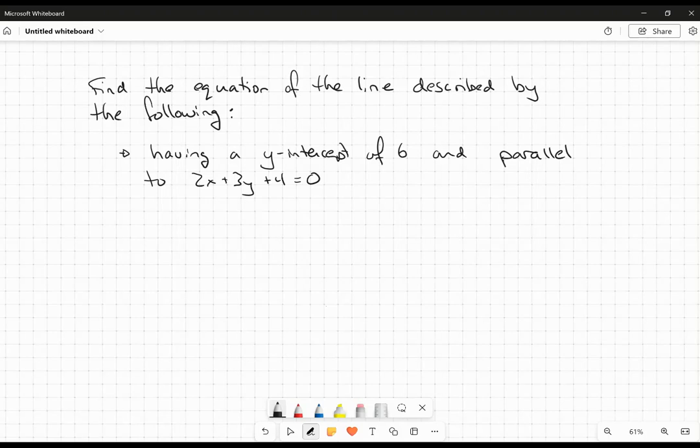All right, hi everybody. So in this video we're going to do a little bit of coordinate geometry. You want to find the equation of the line that has a y-intercept of 6 and parallel to the line 2x plus 3y plus 4 equals 0.